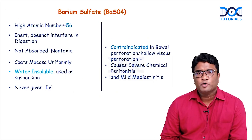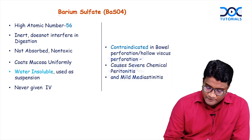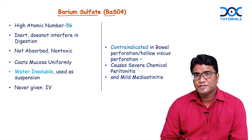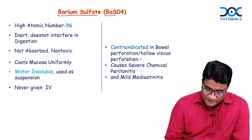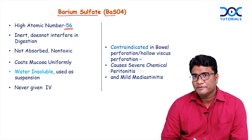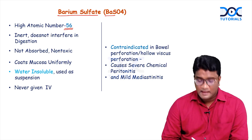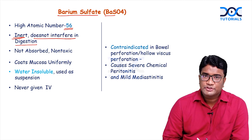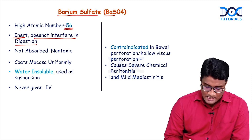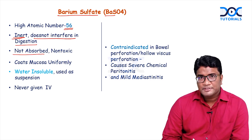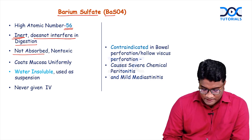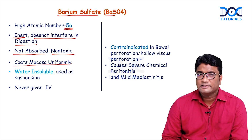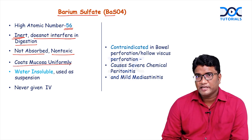Now talking about barium sulphate. Barium sulphate is a common contrast agent used for GI imaging. Barium has a high atomic number of about 56. It is inert and does not interfere with digestion, is not absorbed from the GI tract, is non-toxic, and uniformly coats the mucosa — that is why it is preferred for GI imaging.